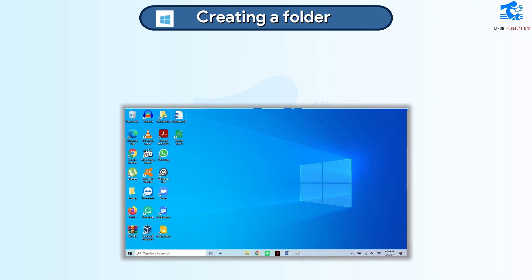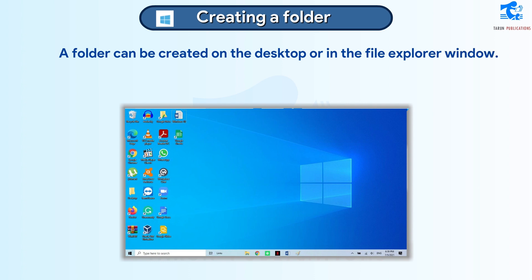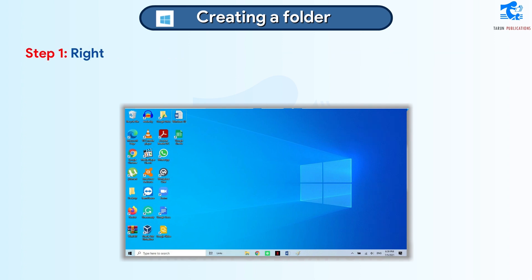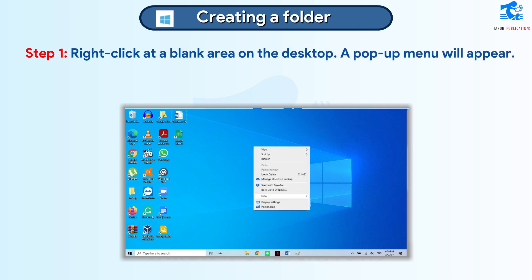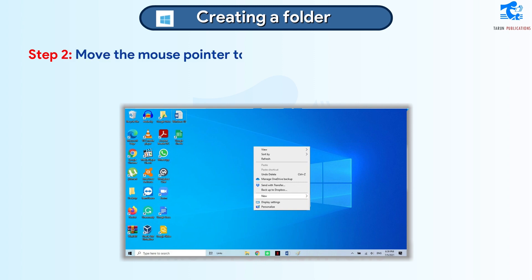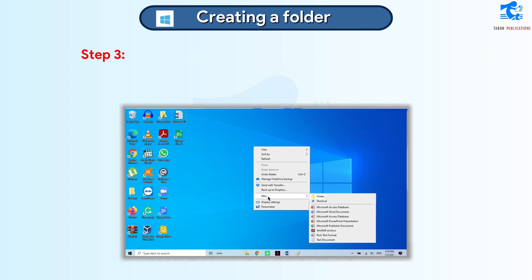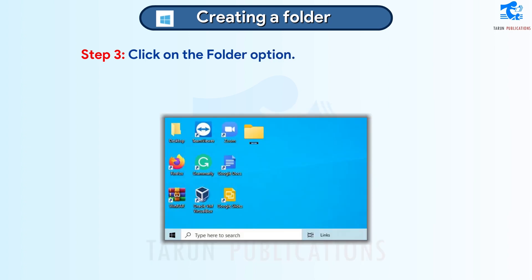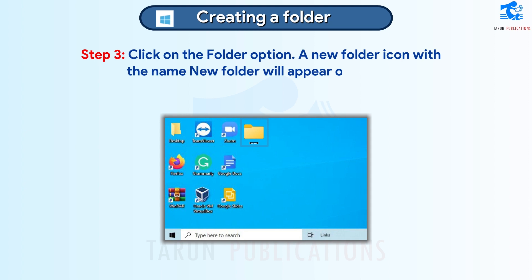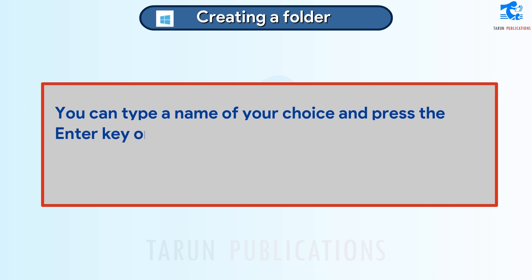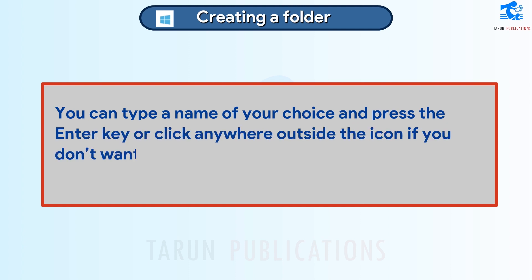Creating a Folder. A folder can be created on the desktop or in the File Explorer window. Follow these steps to create a folder on the desktop. Step 1: Right-click at a blank area on the desktop. A pop-up menu will appear. Step 2: Move the mouse pointer to the New option. A submenu will appear. Step 3: Click on the Folder option. A new folder icon with the name New Folder will appear on the desktop. You can type a name of your choice and press the Enter key, or click anywhere outside the icon if you don't want to type a name.